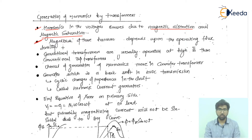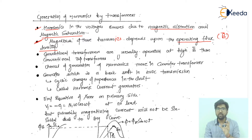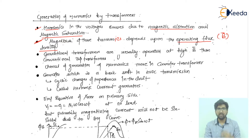Point number two: the magnitude of these harmonics depends upon the operating flux density, denoted by B. The operating flux density mainly depends on the value of flux, because magnetic flux density B is equal to flux (Φ) divided by area (A). So total flux passing through a particular area gives the magnetic flux density.